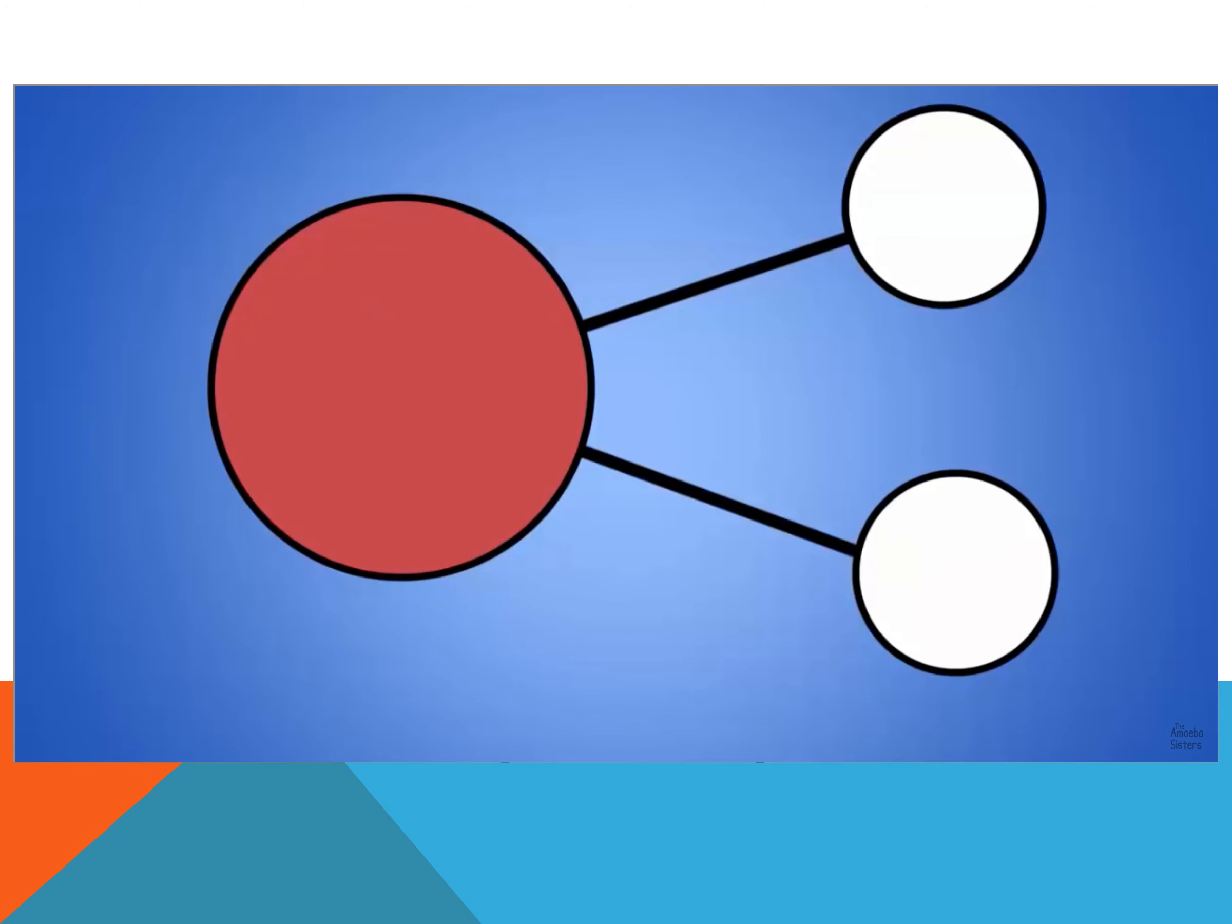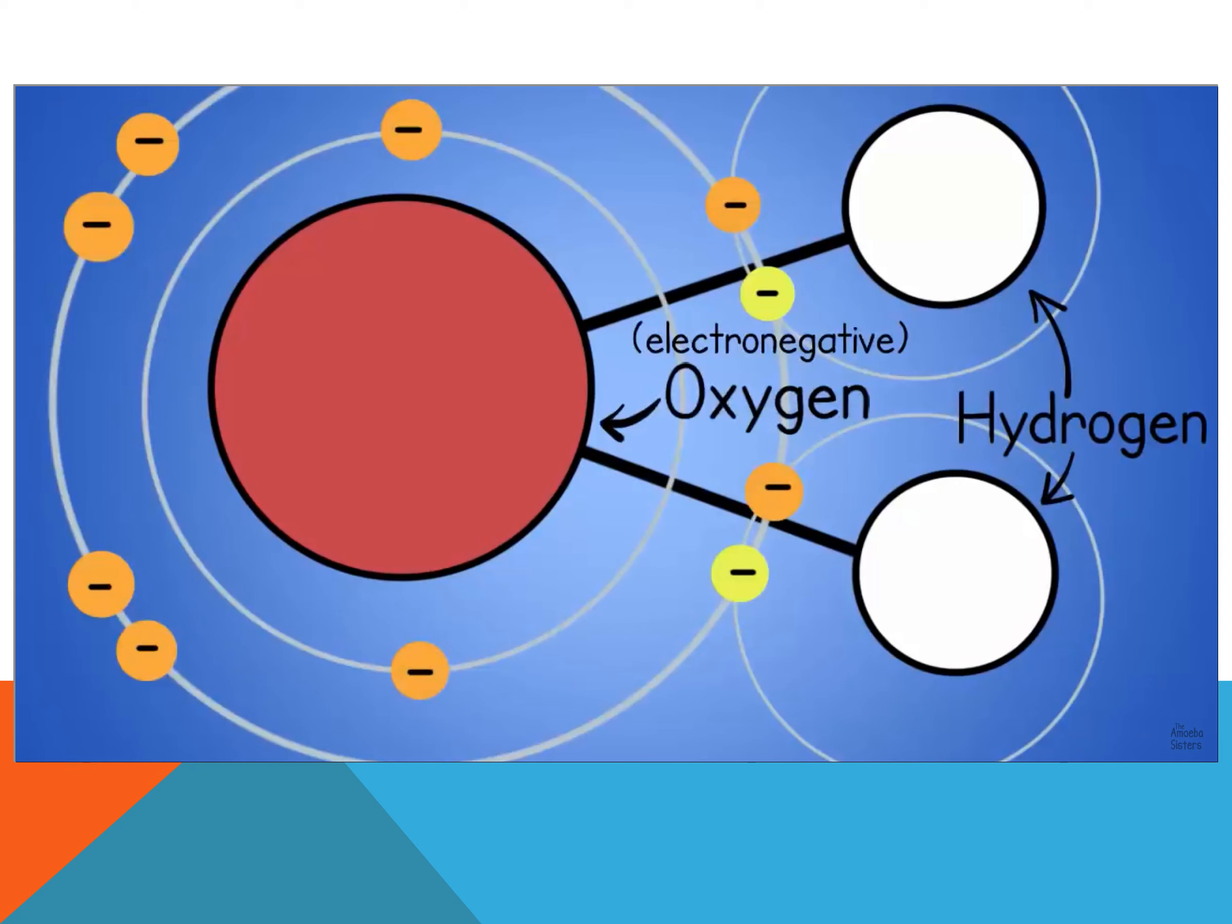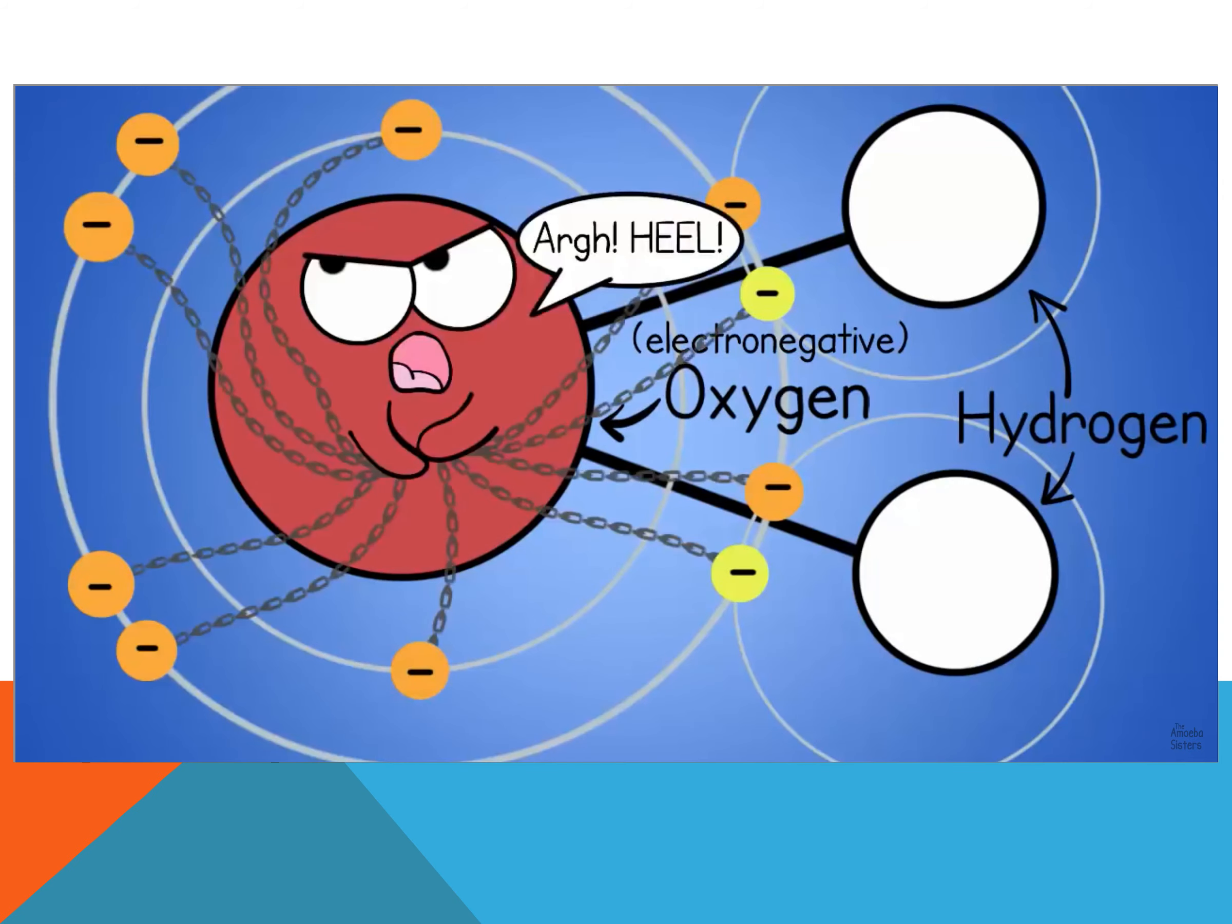Now we mentioned the shape of water and the fact that water is polar. It has one very electronegative oxygen that is always trying to keep the electrons closer to it than to the hydrogens it's bonded to. And this actually gives oxygen a slightly negative charge because of the electrons that are spending more time next to it. And it gives the hydrogens a slightly positive charge.